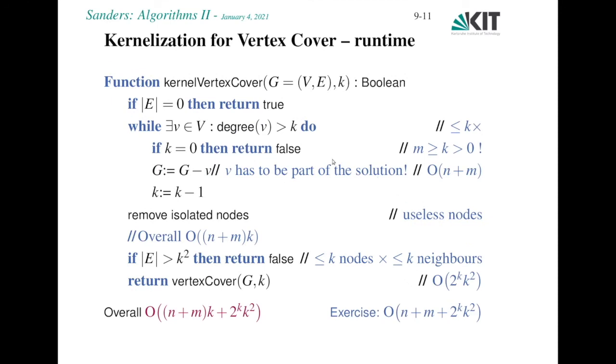What about running time? We can remove a vertex in this while loop at most k times. And we said that removing a vertex takes at most linear time, so the running time for the preprocessing is at most k times n plus m. This is this term in the running time. Then we have a graph with at most k squared edges, and also since we removed isolated nodes, at most k squared nodes. By plugging in the running time for our exponential time algorithm, we get a bound of 2 to the k, k squared for this part.